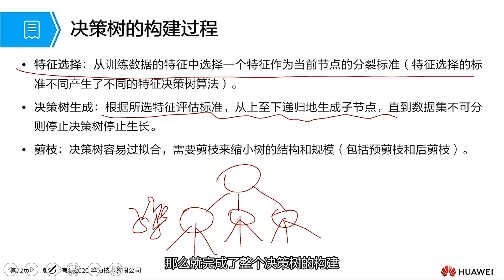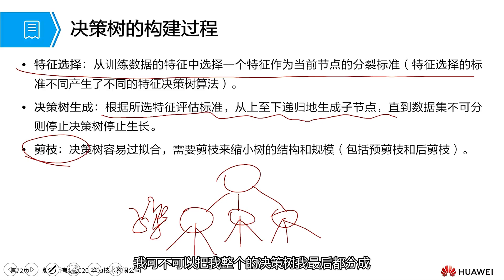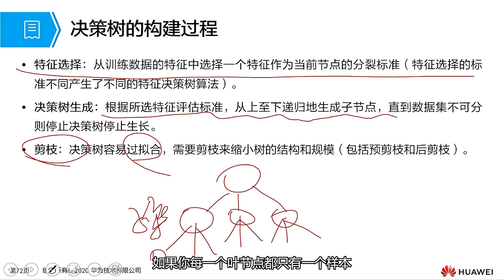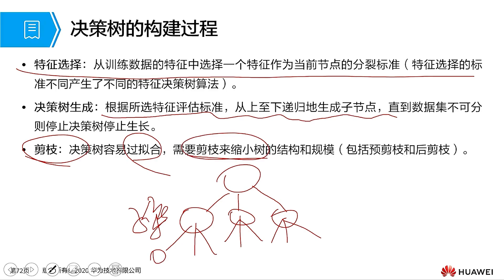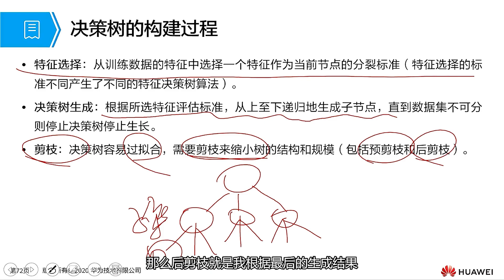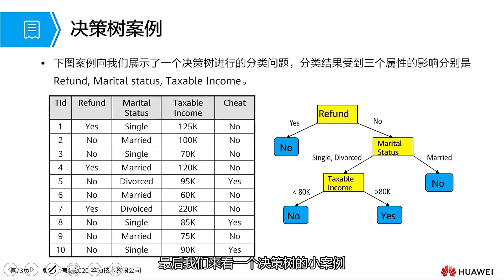There will also be a pruning process in the middle, because you may divide too finely. Some students may wonder: can I split my entire decision tree until each leaf node has only one sample? That would be direct overfitting. So pruning is needed to reduce its structure. There is both pre-pruning and post-pruning. Pre-pruning is when you are about to generate a node and make a judgment about whether to generate it. Post-pruning is based on the final generated results — going back to check which nodes to merge.